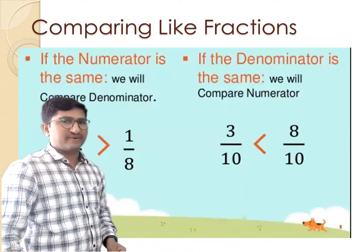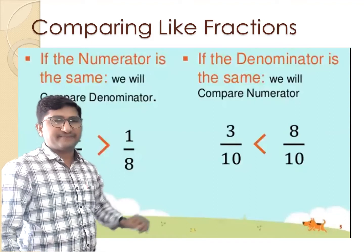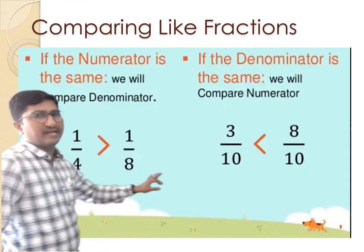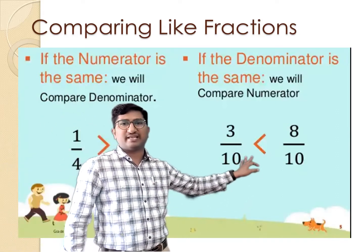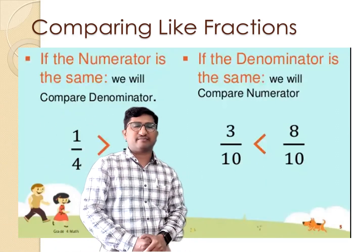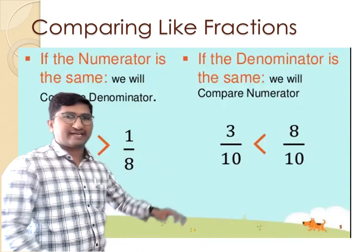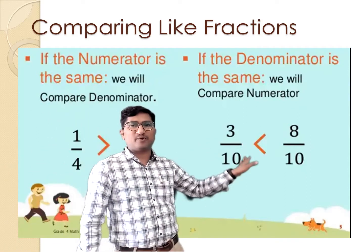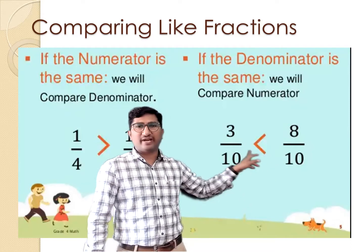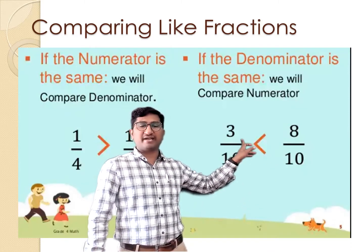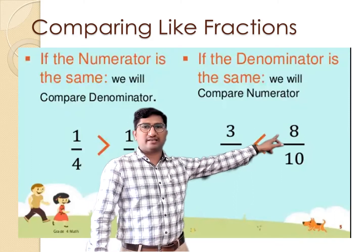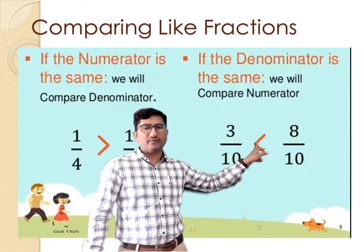Let us check the first example. If the numerators are the same, then go to the denominator for comparison. If the denominators are the same, then check the numerator and easily compare. Here you can see that 3 upon 10 and 8 upon 10 have the same denominator. So where the numerator is bigger, that fraction is bigger — the greater numerator gives the greater fraction.